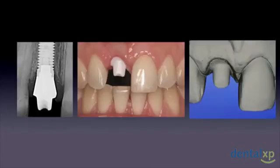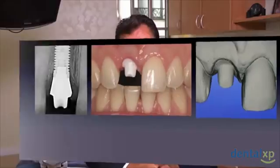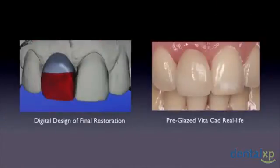This is called the correlation window. This allows us to capture every angle and every incisal embrasure that we'd like and carry that through to our final restoration. As you see here, the final milling out of the machine gives a pretty good replica of our provisional and actually matches the central incisor next to it.